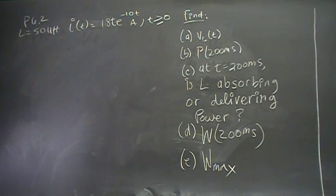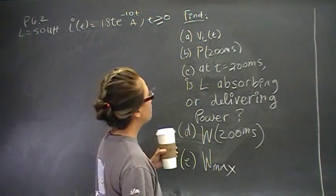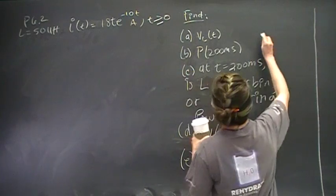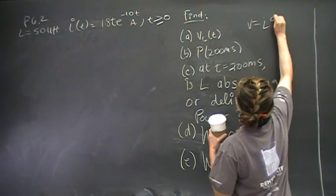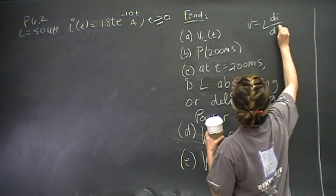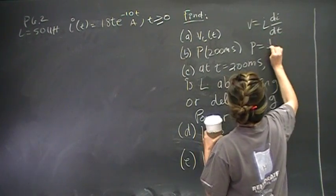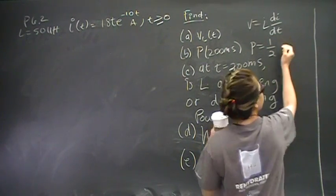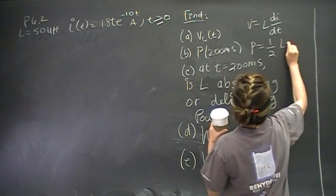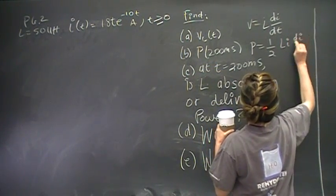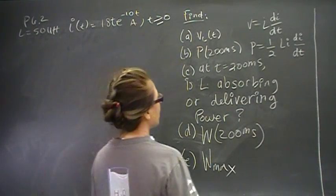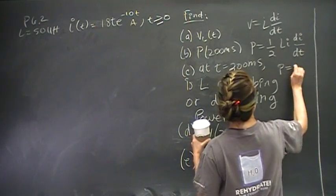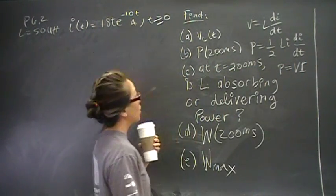So let's get started. For this problem, we need the voltage, the inductor voltage formula. V is equal to, I don't have it memorized, but I wrote it over there, L dI/dt. We also have P is equal to one-half L dI/dt. What else do we need? P is equal to VI makes life easier.